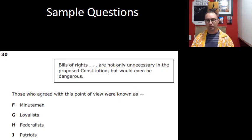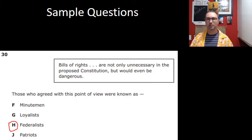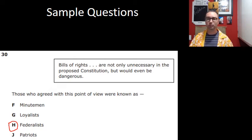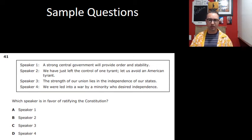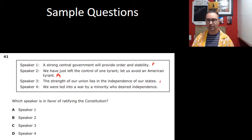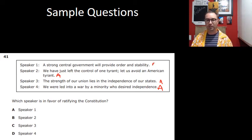'Bill of Rights are not only unnecessary in the proposed Constitution but would be even dangerous.' That is a Federalist idea. The Federalists did not want a Bill of Rights, but ended up writing one anyway just to get the Constitution passed — that was the bargain made. The Federalists wrote a Bill of Rights so that the Anti-Federalists would support the Constitution. Speaker 1 said a strong central government will provide order and stability — that's Federalist. The other speakers expressed Anti-Federalist ideas, so the answer is Speaker 1.